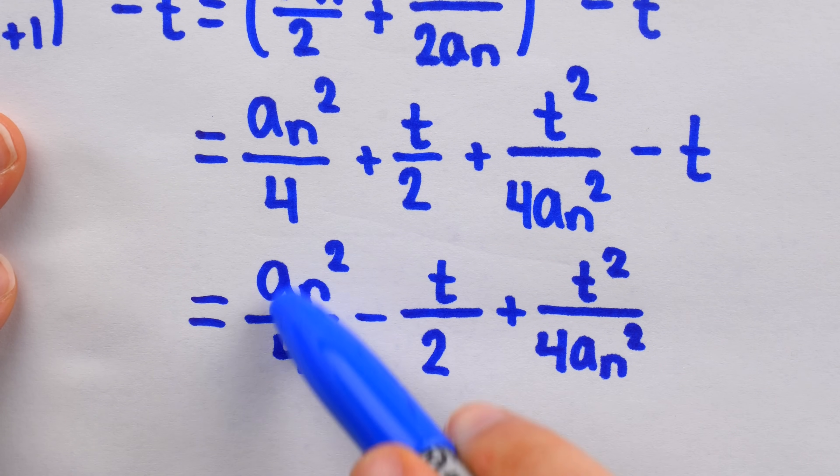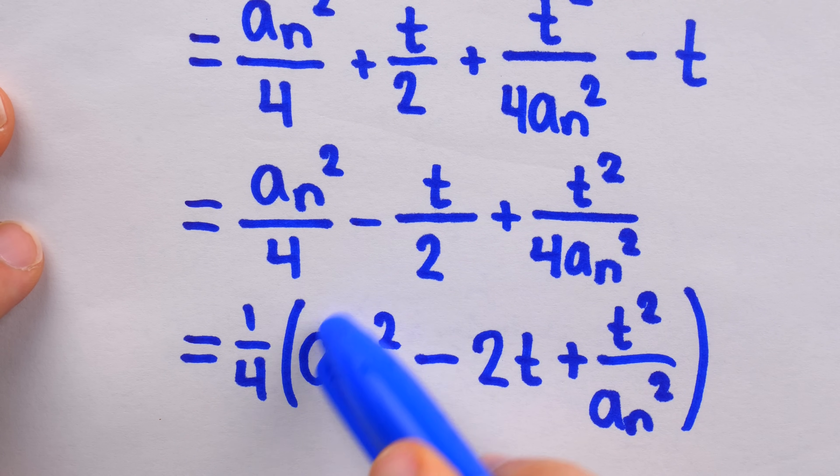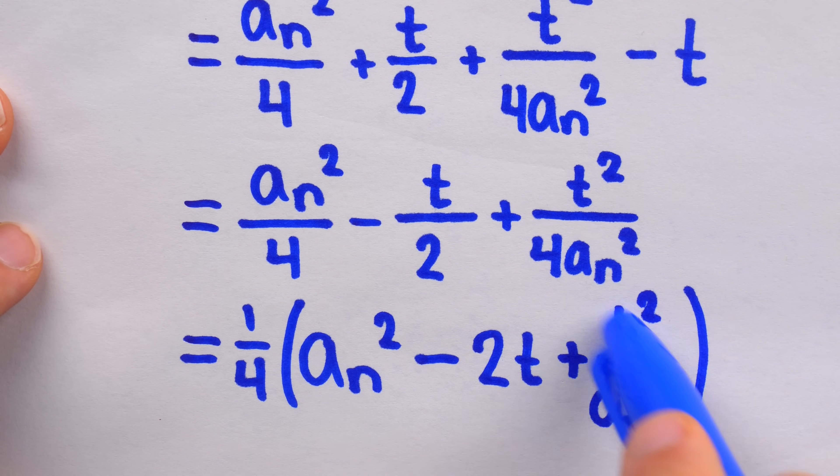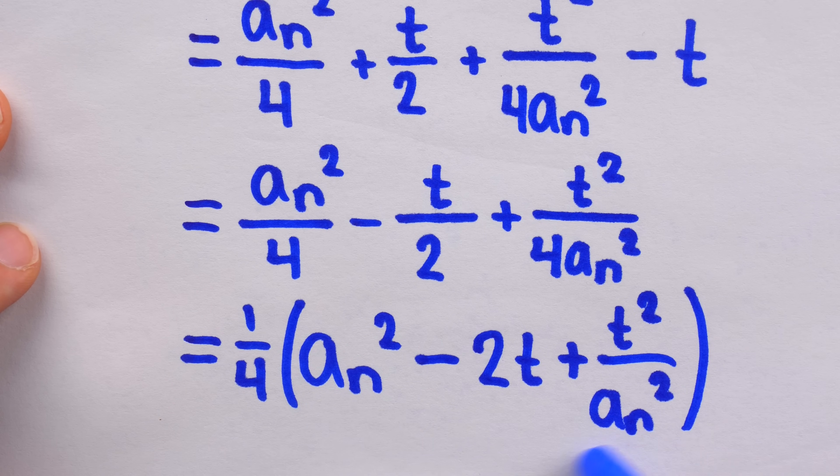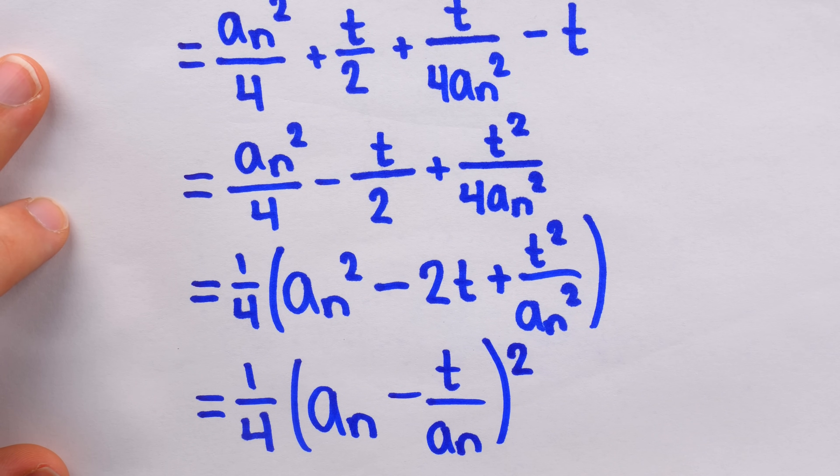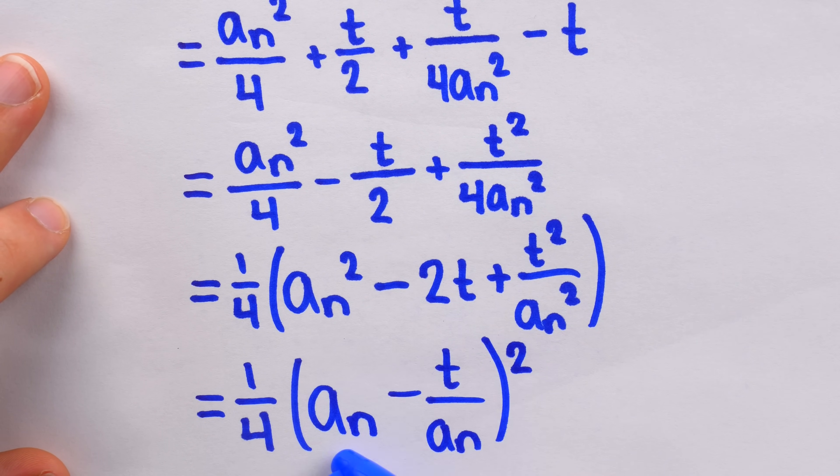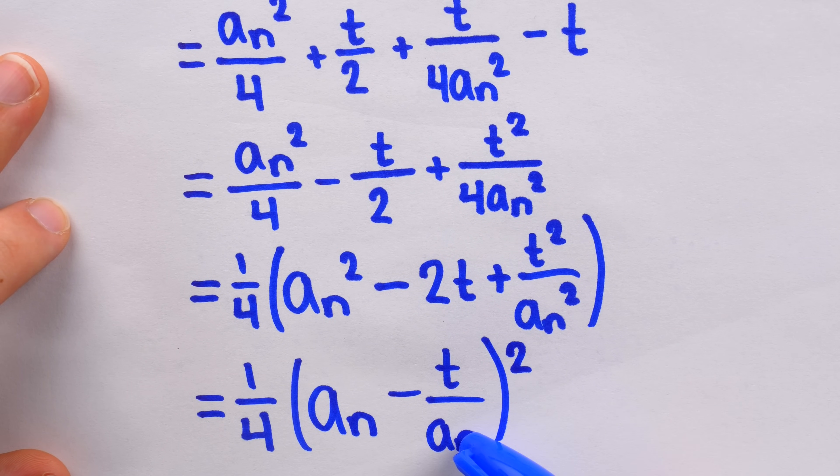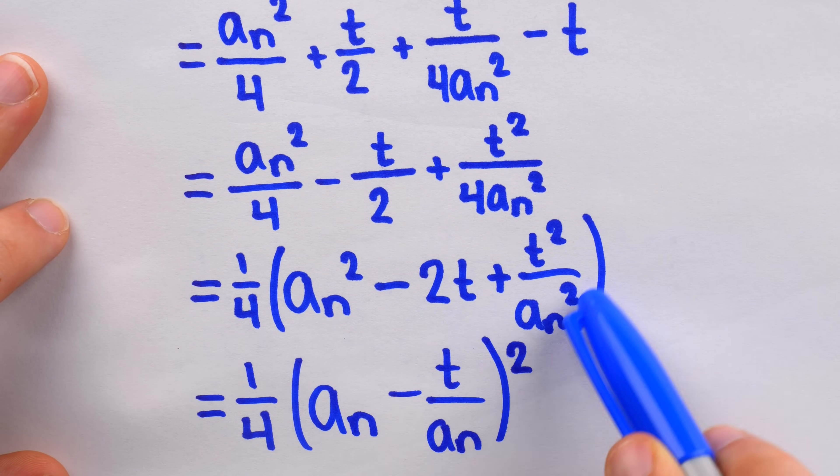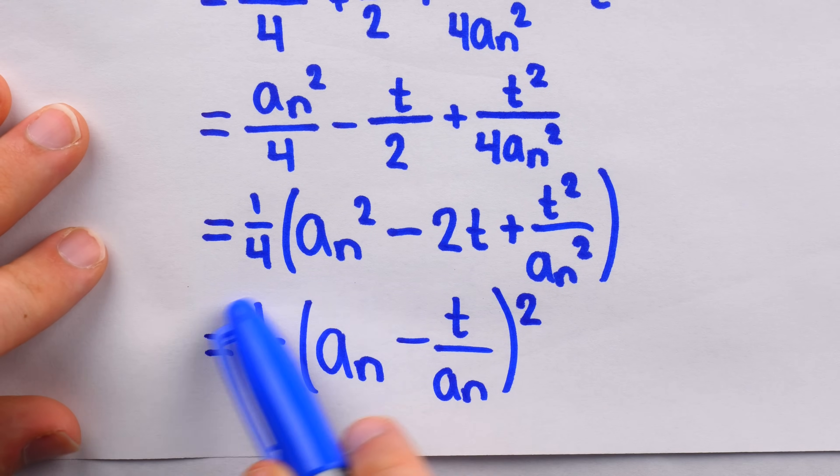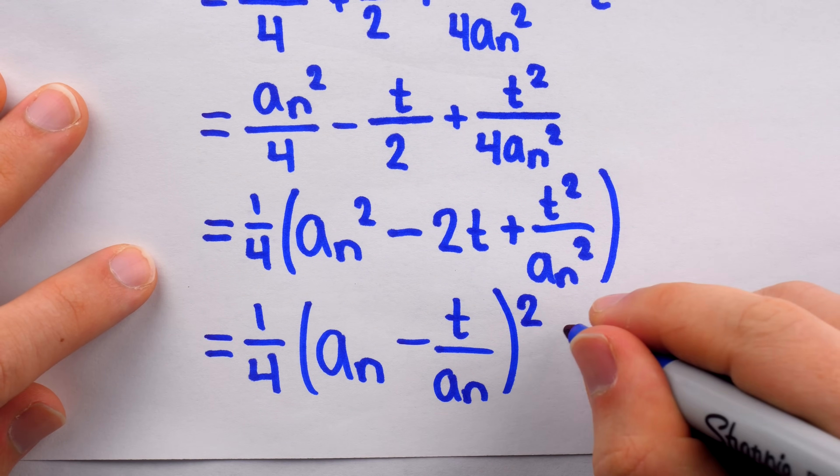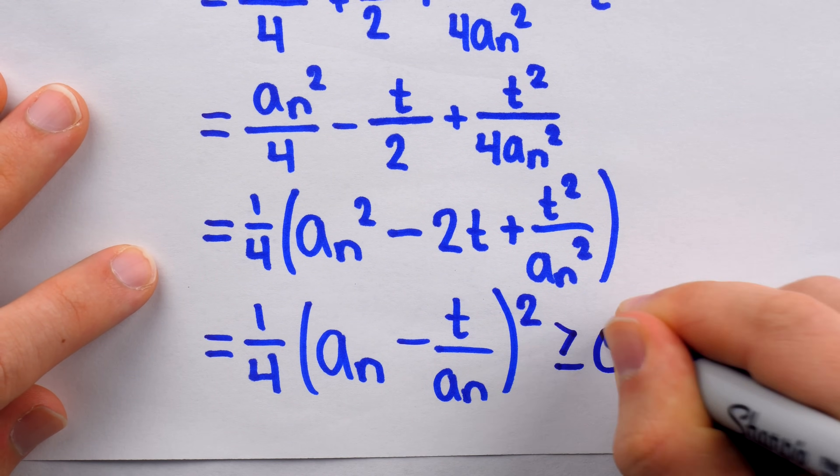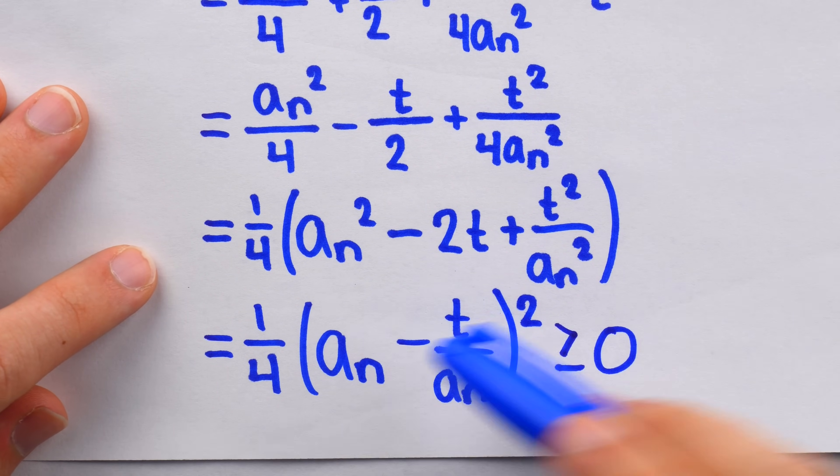Now, from this expression, we'll factor out 1 fourth. And then, we must recognize that this is a perfect square so that we can factor it into a binomial squared. Indeed, you can verify yourself that if we square a n minus t over a n, we would get this expression back. So, we end up here, and this, for sure, is at least 0.